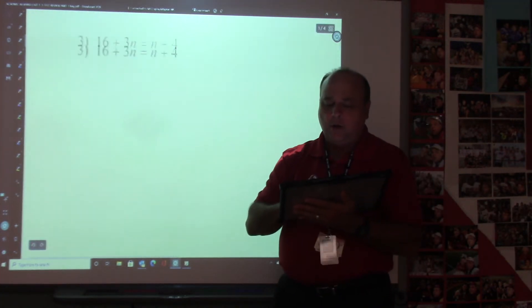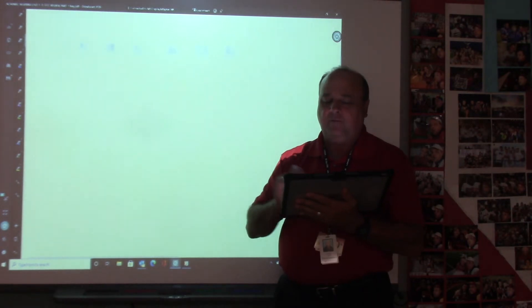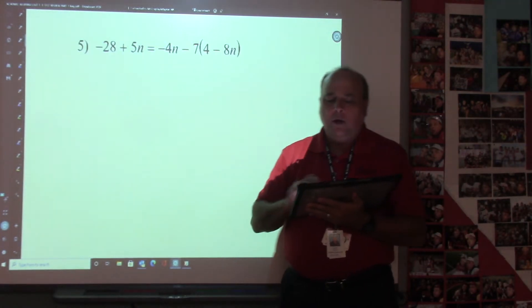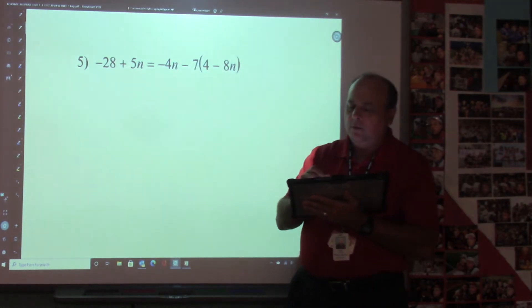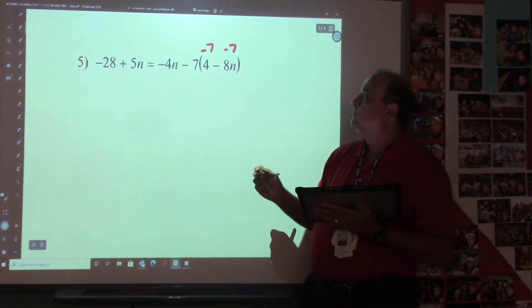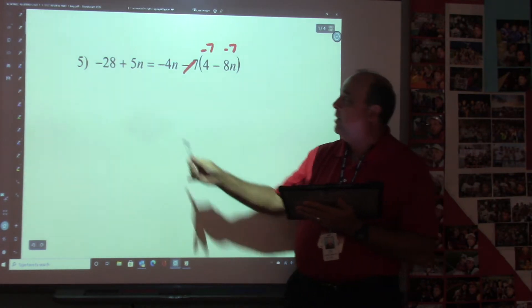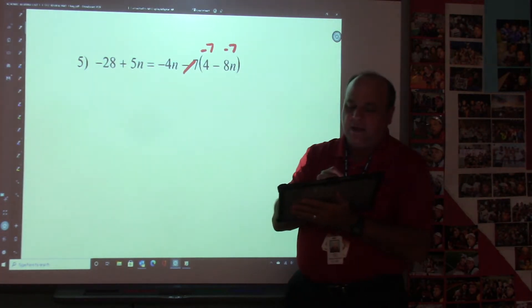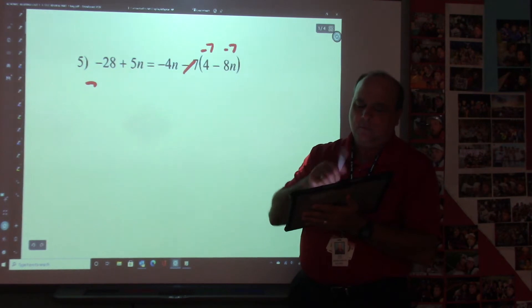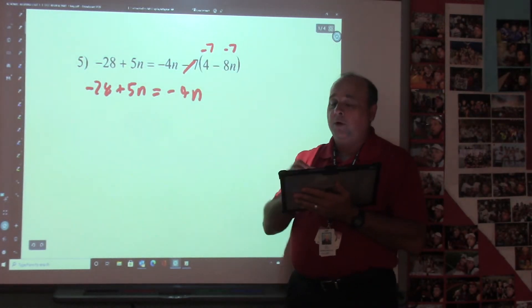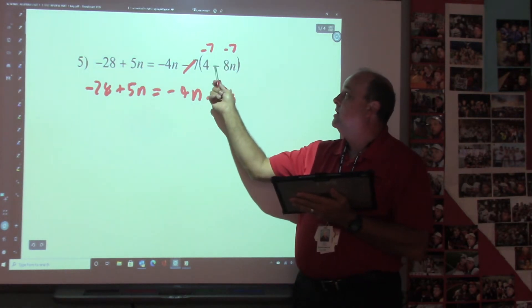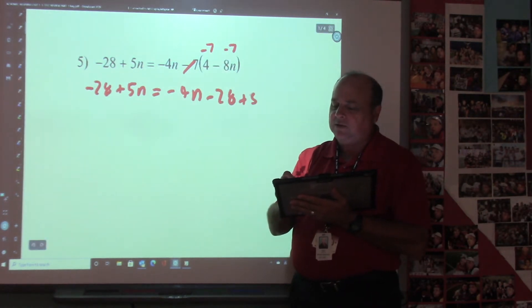Let's go down and do number 5. On number 5, we're going to take the -7 and distribute it. We're going to scratch this one out. Now then, let's drop the -28, +5n = -4n. -7 times 4 is -28, and -7 times -8 is +56n.